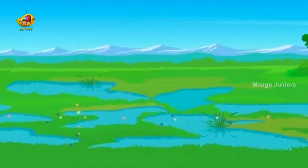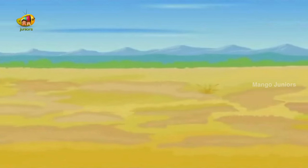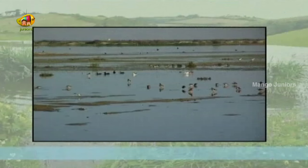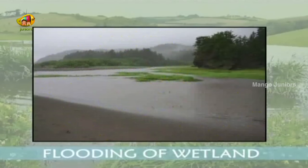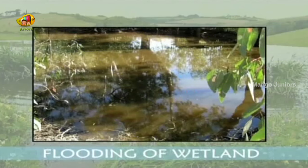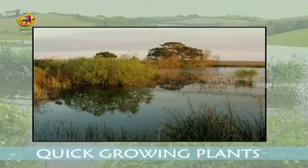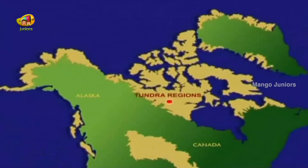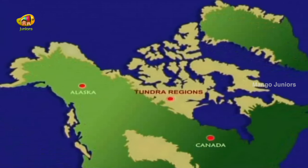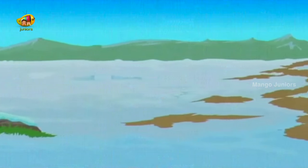In the rainy season, wetlands can grow thousands of kilometers wide, while during the dry season they shrink enormously. In cold countries, with the arrival of spring, ice and snow starts to melt, leading to flooding of the wetland. During this time, only quick-growing plants survive. While in tundra regions of Alaska and northern Canada, ice remains throughout the year and is permanently frozen. Water cannot drain away, so this place has a special type of wetland known as bogs.